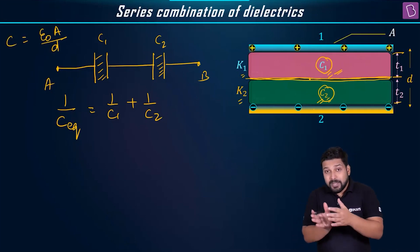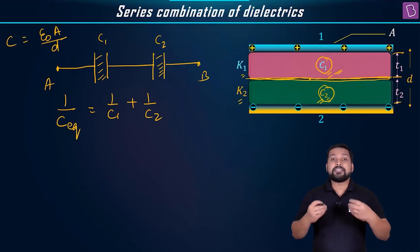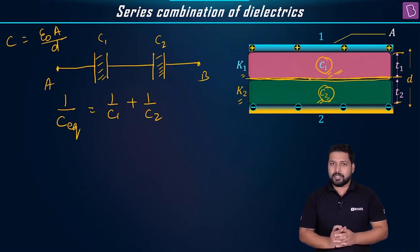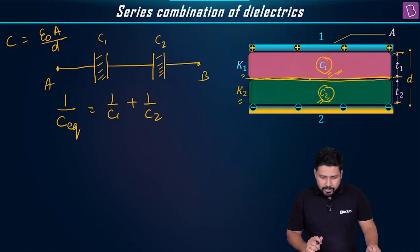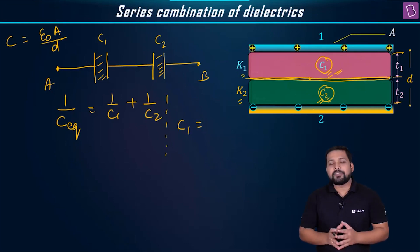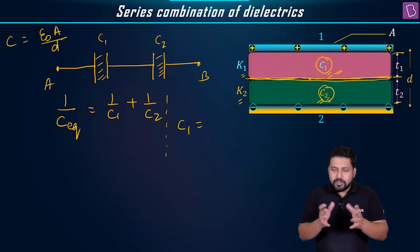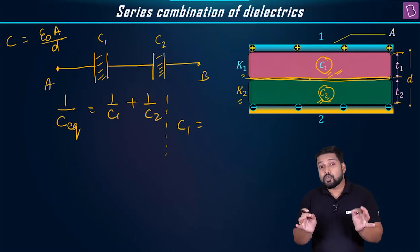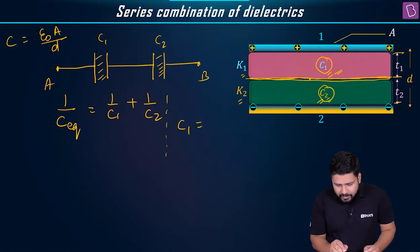Since the dielectric slabs are placed in such a manner that they are parallel to the plates, this type of connection we call it as series connection and we'll redraw an equivalent circuit like this always. Now, once we have got this, let's write down the values of c1 and c2. What will be c1? In both the cases, for both of these dielectric slabs, because it is inserted in between the two plates such that they're parallel to the plates itself, which means the area is going to be the same.